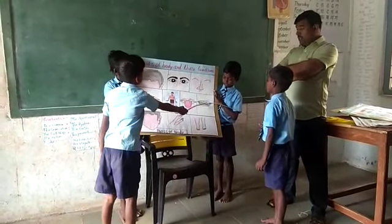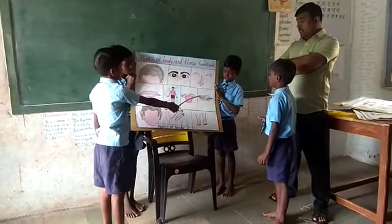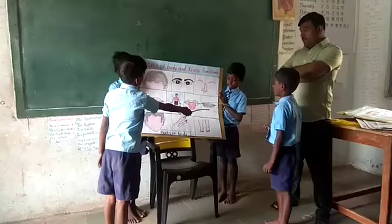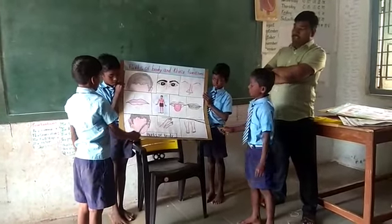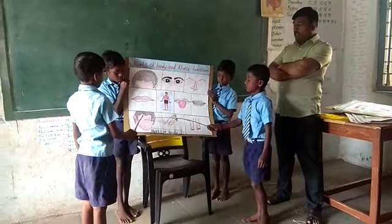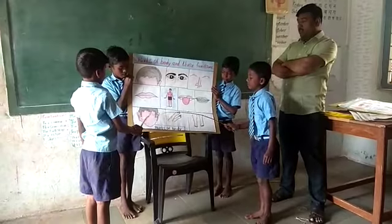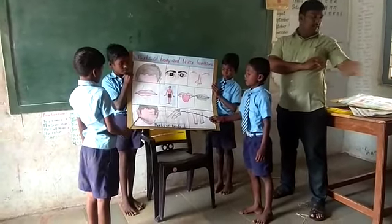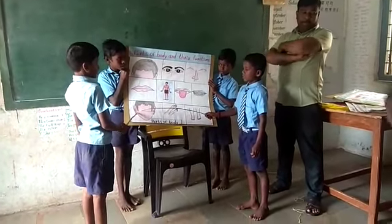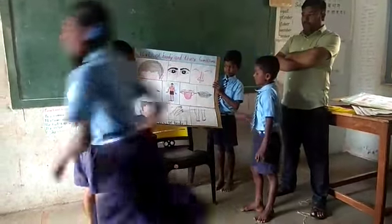What are these? These are teeth. What do you do with your teeth? I bite with my teeth. What are these? These are ears. What do you do with your ears? I hear with my ears.